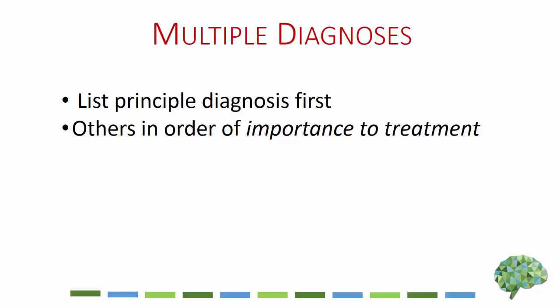Importance to treatment is something you'll develop expertise on the more you practice. Certain diagnoses are foundational and must be dealt with first. For example, with clients who have anxiety disorders, their sleep-wake disturbance — their insomnia — is often more important to treatment than the anxiety disorder itself. So I may list insomnia disorder as the most important to treat. I explain this to the client, and it's also important when being audited by an insurance carrier, since services for treating insomnia differ from those for treating, say, acute stress disorder.